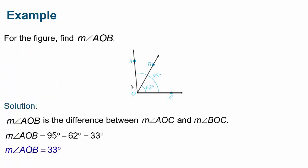Let's try this figure problem: find the measure of angle AOB. We can see that the measure of angle AOC is 95 degrees, and the measure of angle BOC is 62 degrees. The remaining part — angle AOB — must be the difference of these two, so 95 degrees minus 62 degrees equals 33 degrees. That's the measure of this missing angle.